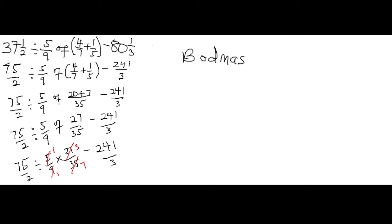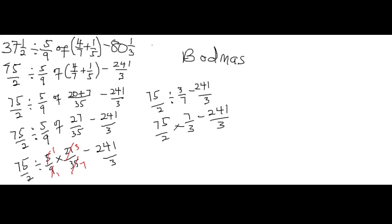After the cancellation, 5/9 of 27/35 simplifies to 3/7. So we are left with 75/2 divided by 3/7, minus 241/3. We are done with 'Of', so we move to Division. For division, we reciprocate the divisor and change the sign to multiplication. So 3/7 becomes 7/3, giving us 75/2 times 7/3, minus 241/3.